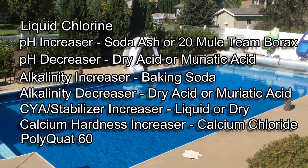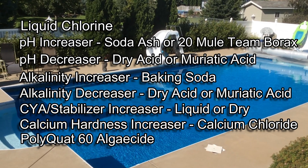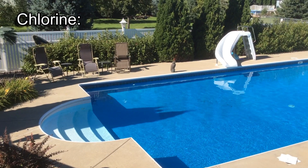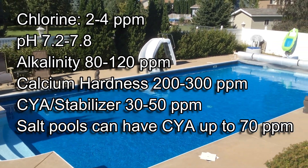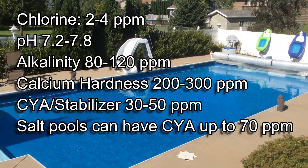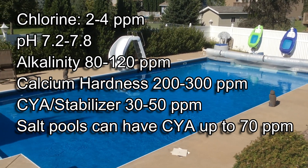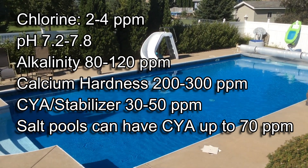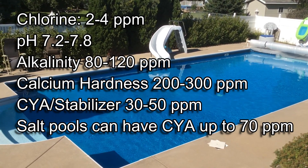You can also have a good algaecide on hand — a Polyquat 60 is what I recommend. And if you have a salt pool, make sure you have salt on hand. The five areas that we'll want to test are: chlorine at 2-4 parts per million, pH at 7.2-7.8, alkalinity at 80-120 parts per million, calcium hardness at 200-300 parts per million, and cyanuric acid stabilizer at 30-50 parts per million.